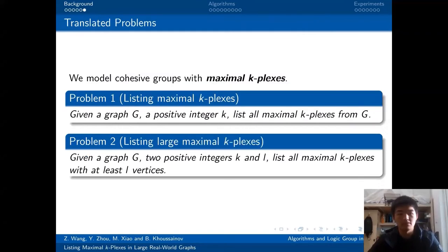So in this talk, I will model cohesive groups with the maximal k-plexes. Otherwise, I can expand the non-maximal ones until they become maximal. Therefore, we can translate our task into two problems. The first problem is listing all the maximal k-plexes. Furthermore, sometimes we want cohesive groups with a certain scale. Therefore, we would like to list maximal k-plexes with a lower bound L. These are the two problems to be solved.